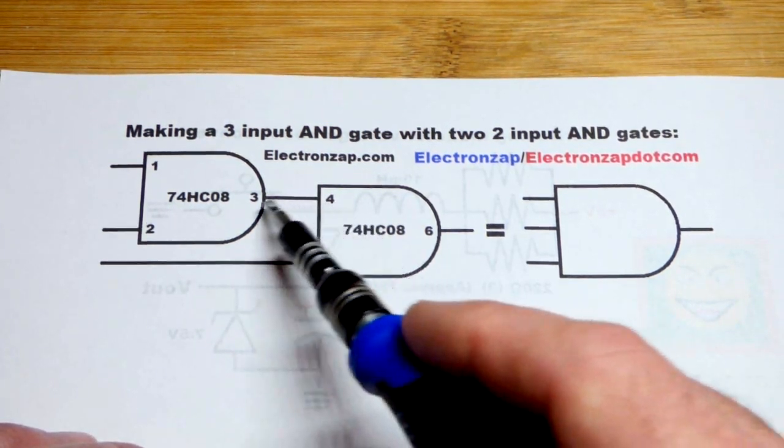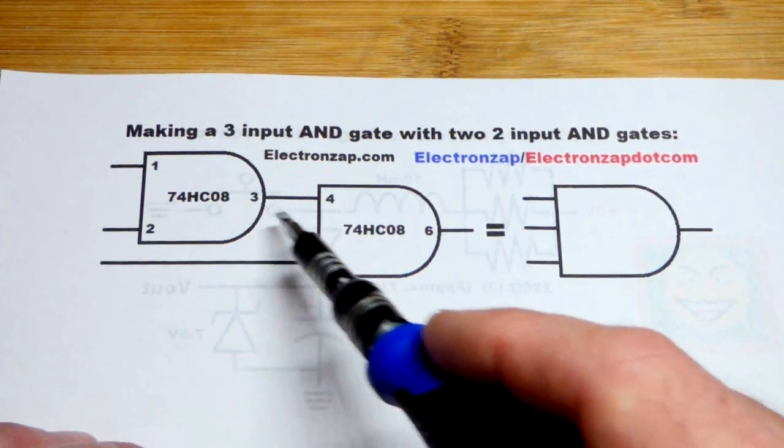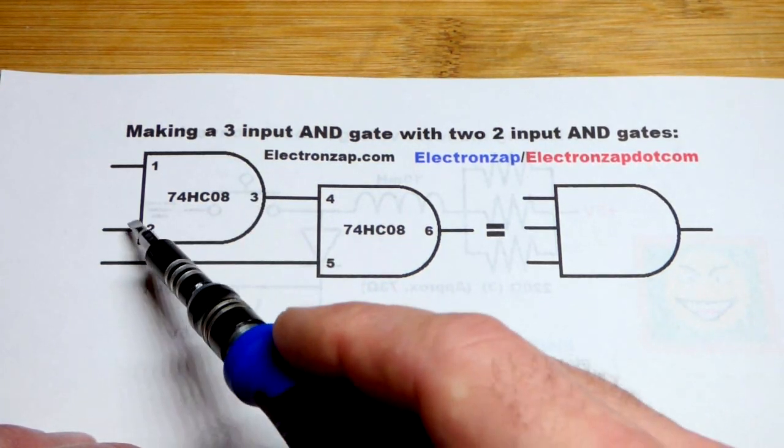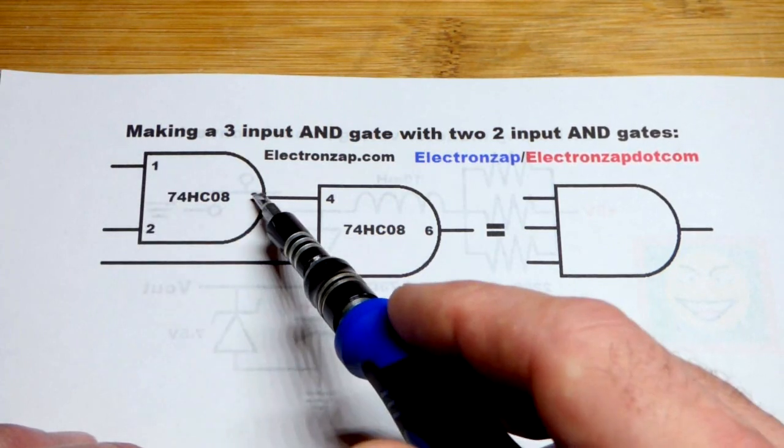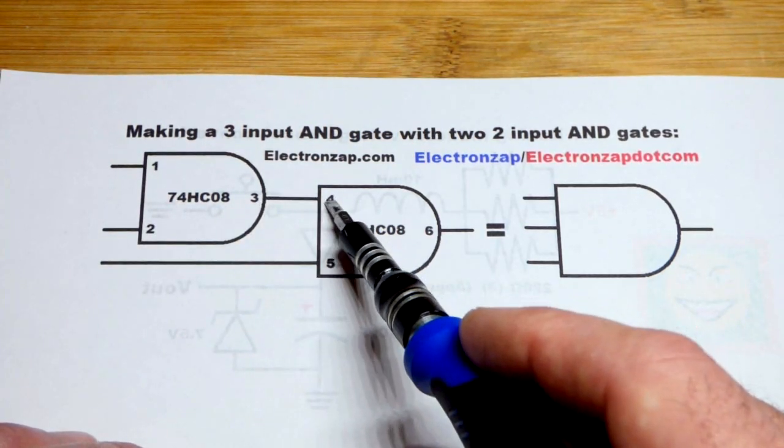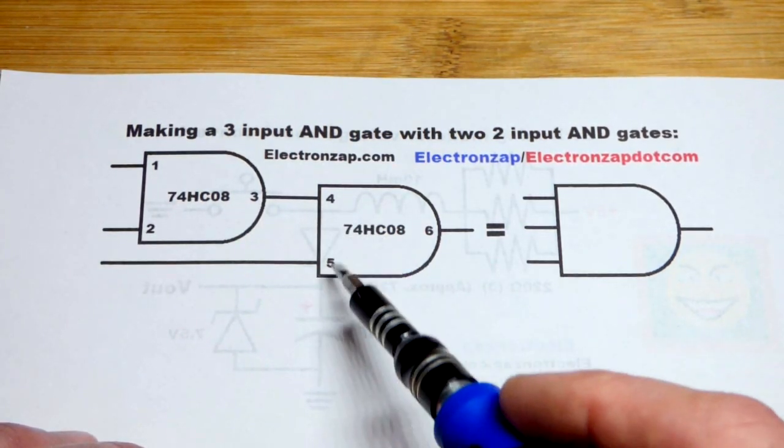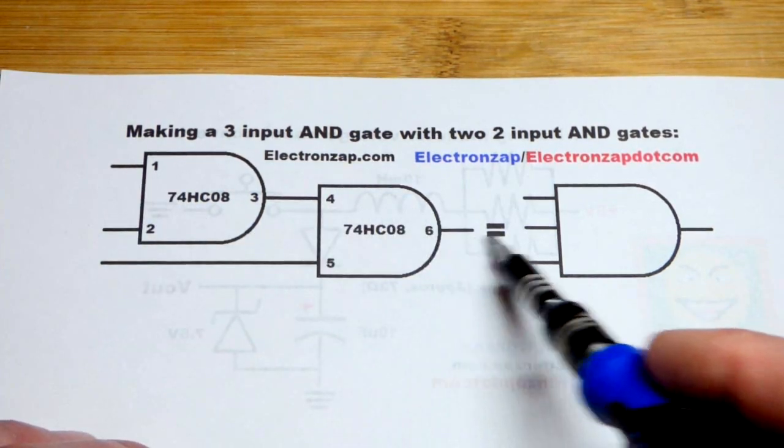The other input getting a signal from the output of another AND gate. So we will need both inputs to be high for the output to be high, and thus the input to be high. And then once they're all high, then the output will be high.